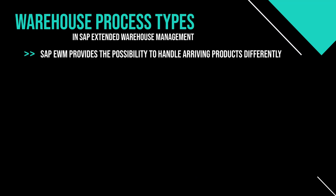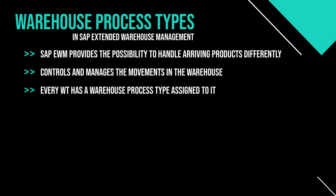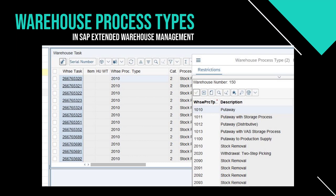In Extended Warehouse Management, the warehouse process type controls and manages the movements in the warehouse. The EWM system works on all different warehouse processes — such as goods receipt, goods issue, posting changes, and repacking — with the help of warehouse process types. Every warehouse task created in SAP EWM has a warehouse process type assigned to it, and this also influences the creation of the warehouse tasks.